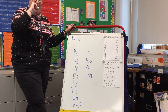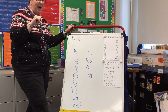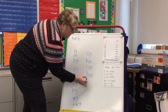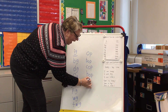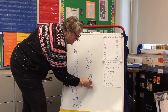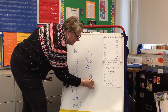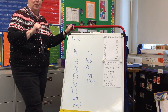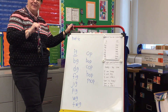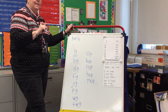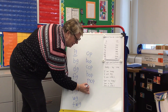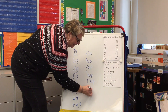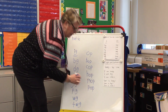Next one is 'mop.' If you spill, you might have to get the mop — M like mouse, O like octopus, and P like pig. Next one is 'pop' — P like pig, O like octopus, and P like pig.